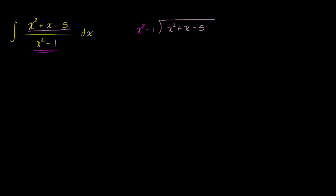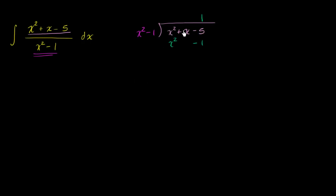Let's look at the highest degree terms. How many times does x squared go into x squared? Well, it goes one time. One times x squared minus one is just going to be x squared minus one. And now you subtract this expression from the dividend.